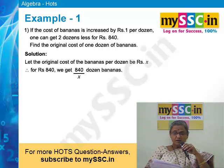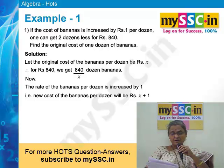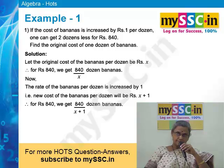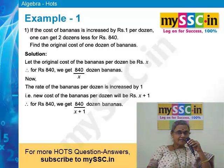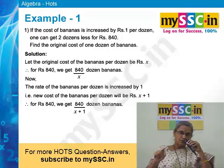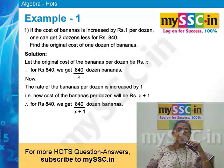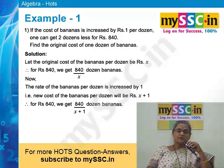This is a very important point. Now the rate is increased by rupee 1 per dozen. Therefore for 840 rupees, we get 840 upon (x + 1) dozen bananas. Because our original assumption is that the cost of 1 dozen banana is x, and to that original cost 1 rupee is added. Therefore the rate is now x + 1, and in 840 rupees you will get 840 divided by (x + 1) dozen bananas.